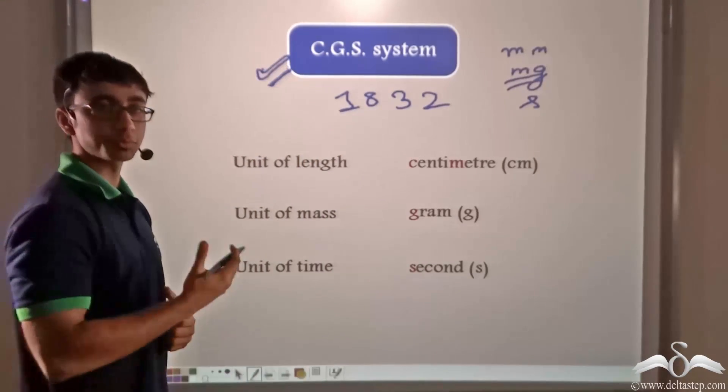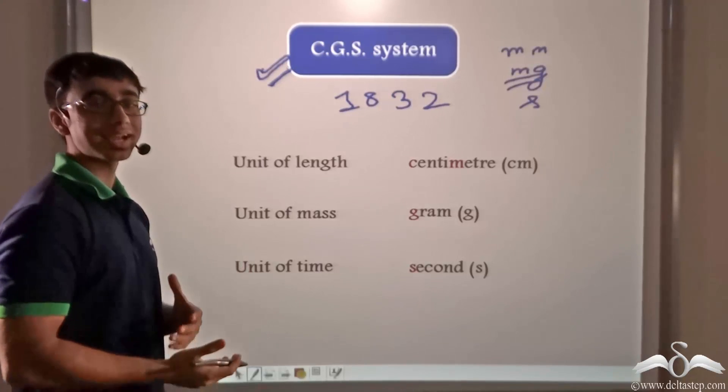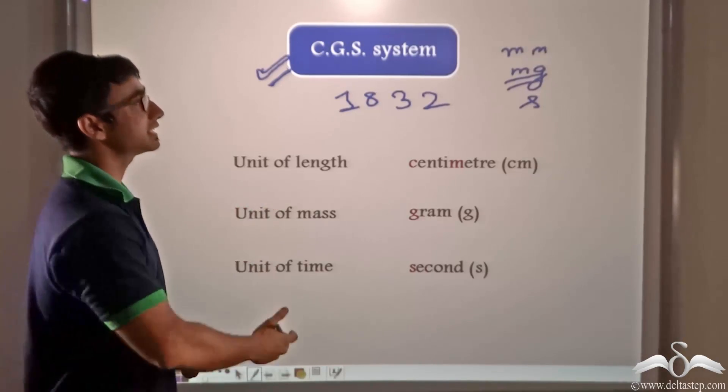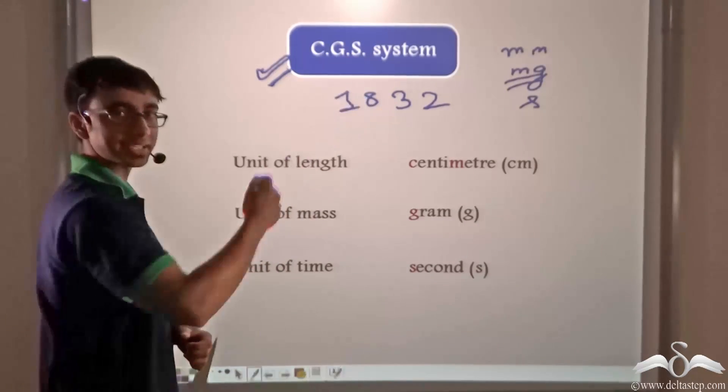This CGS system was proposed by James Maxwell and William Thomson, two British scientists. They proposed that instead of millimeters, milligrams and seconds,